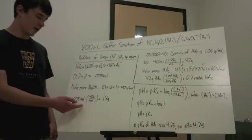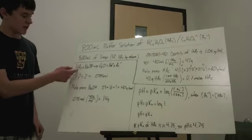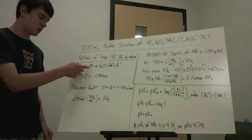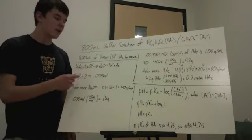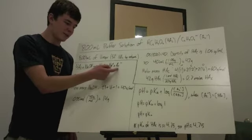So, when we have this many moles of sodium hydroxide, since it reacts with the acetic acid in a one-to-one ratio, half of the acetic acid will react with all of the sodium hydroxide, which will yield 0.35 moles of acetate.